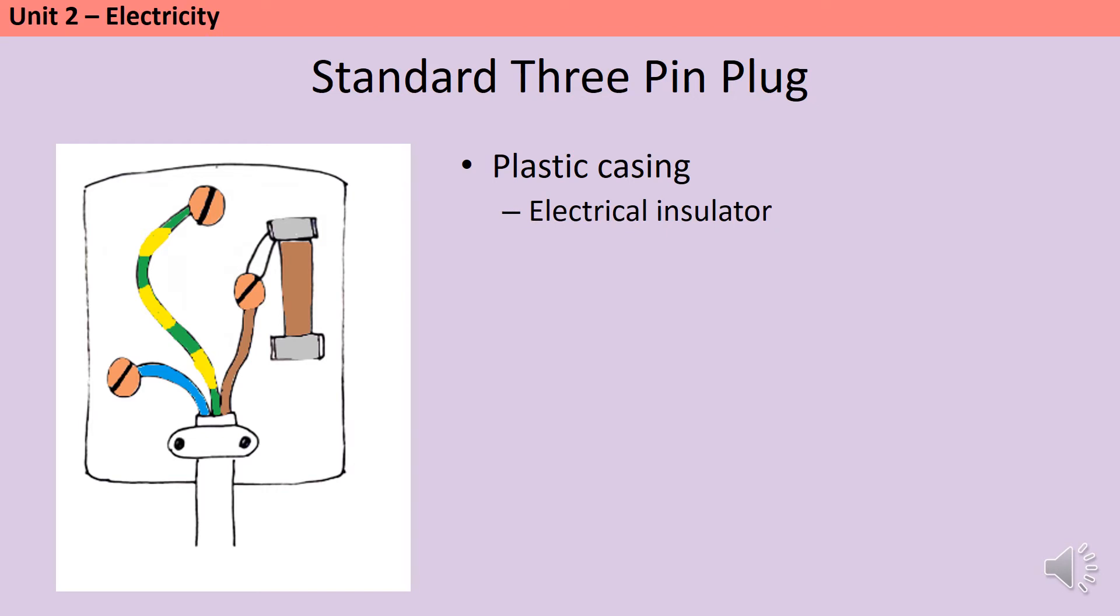Inside the plug there is a fuse, and this is connected to the live wire. The point of the fuse is that it contains a very thin wire that will melt if too high of a current flows, and this helps to protect you in the event of an electrical surge. Standard British fuses tend to be 3 amps or 13 amps.